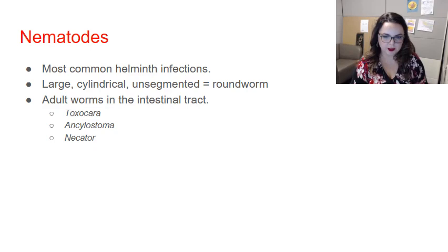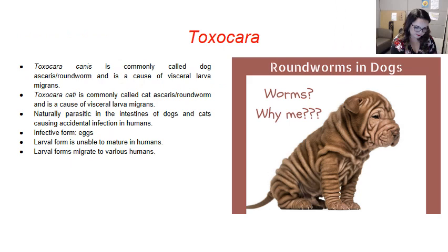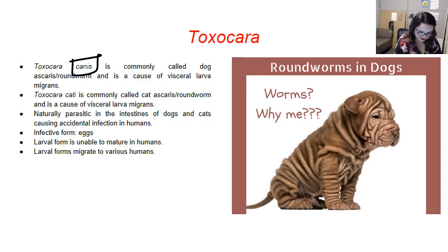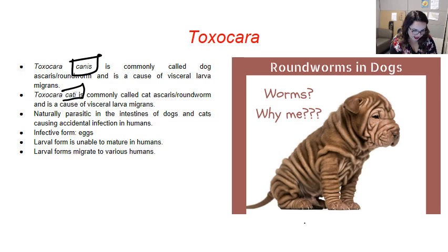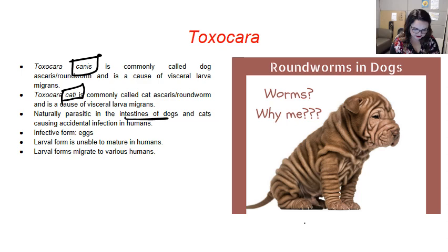Toxocara species are commonly associated with either dogs or cats. Toxocara canis is basically dog roundworm and is a common cause of visceral larvae migrans. Toxocara catti, associated with cats, is also a cause of visceral larvae migrans. When we think about deworming our dogs and cats, it's actually an important preventative step. These worms are naturally parasitic in the intestines of dogs and cats depending on the species.